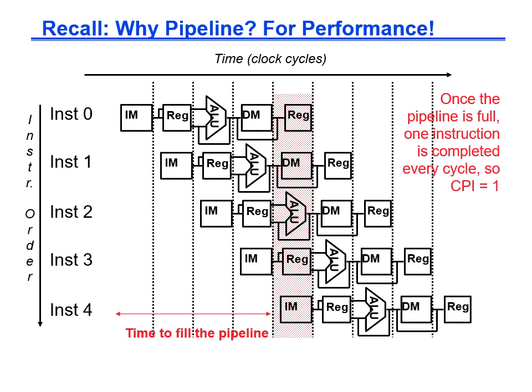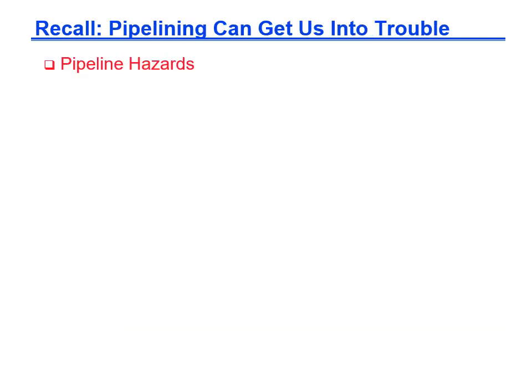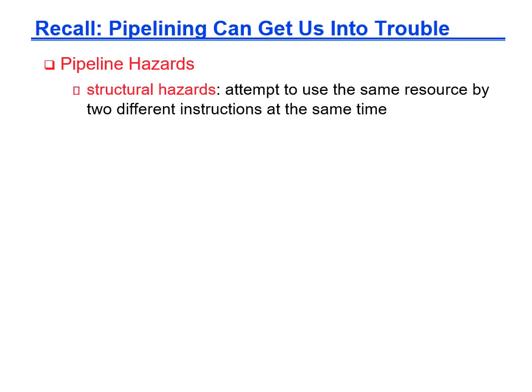Unfortunately, we can never achieve one CPI, and today we will explain in greater detail why that is. The primary cause for increased CPI comes from hazards. There are three kinds of hazards.